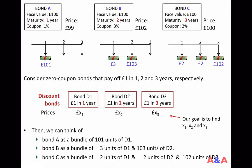You should be able to tell how much cash you can get and when from each bond. If you own Bond A, after 1 year you receive 100 plus 1% of 100, a total of 101 pounds. If you own Bond B, after 1 year you receive 3 pounds coupon, and after 2 years you receive 3 pounds plus the face value 100. With Bond C, after 1 year you receive a 2-pound coupon, after 2 years another 2-pound coupon, and after 3 years 100 plus 2 pounds.